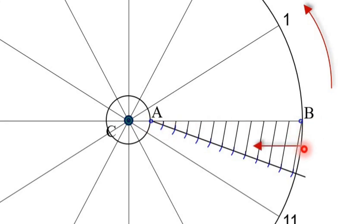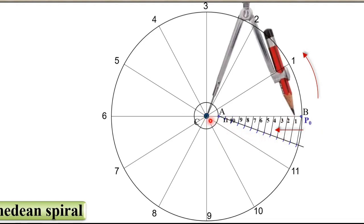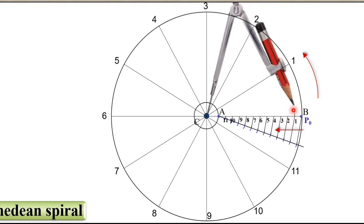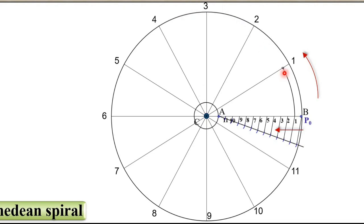Now give the name — once again assume that the object is moving towards the center, so the numbering will be in that direction from 1, 2, 3, 4 up to 11. Now assume that initially the object is at B. The object is moving towards the center, and at the same time the circle will rotate in the anticlockwise direction. For each position, take the compass, set the radius as C to 1, draw the arc with C as center, so that you will get the next position of this object. Give the name as P1.